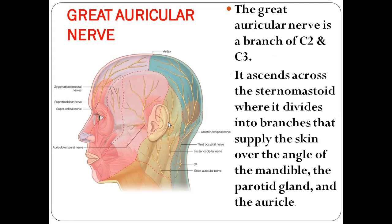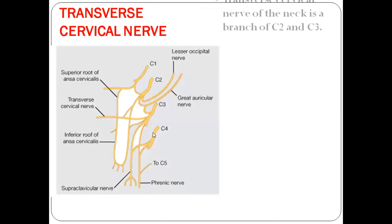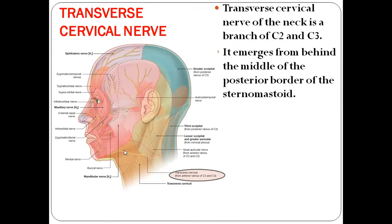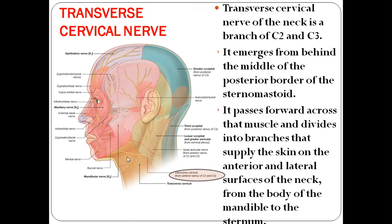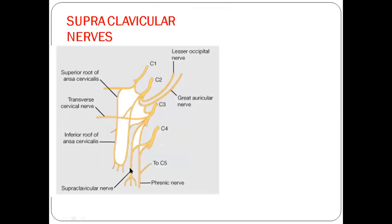The great auricular nerve, a branch of C2 and C3, ascends along the posterior border of sternocleidomastoid and supplies the skin over the angle of the mandible, the parotid gland, and the auricle. The transverse cervical nerve, also from C2 and C3, emerges from the middle of the posterior border of sternocleidomastoid, passes forwards across the muscle, and divides into branches supplying the skin of the anterior and lateral surface of the neck.